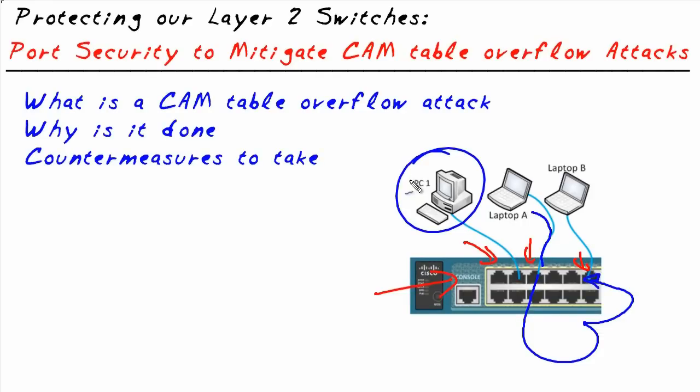What the attacker can do is leverage something called the content addressable memory space on a switch. Switches can only memorize so many MAC addresses — maybe 3,000 or 4,000 or higher depending on the switch — but they certainly can't memorize 100,000 or 150,000. So here's the attack.